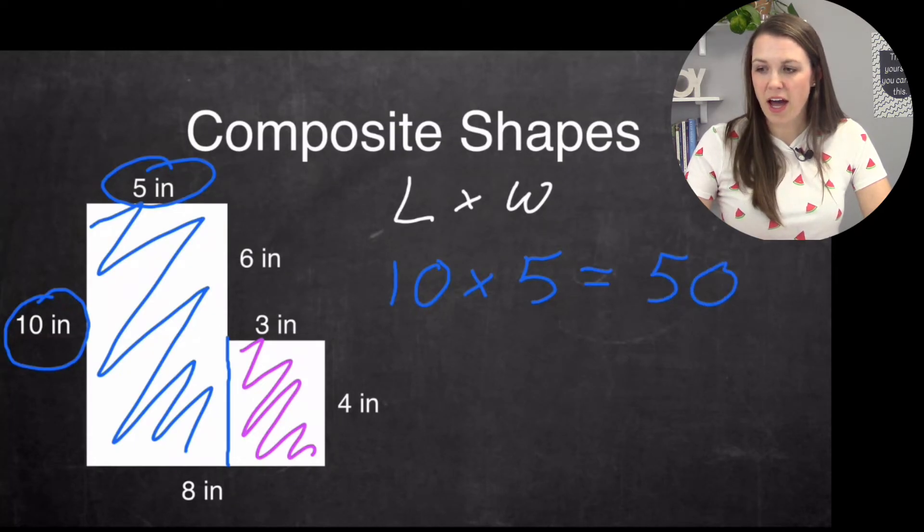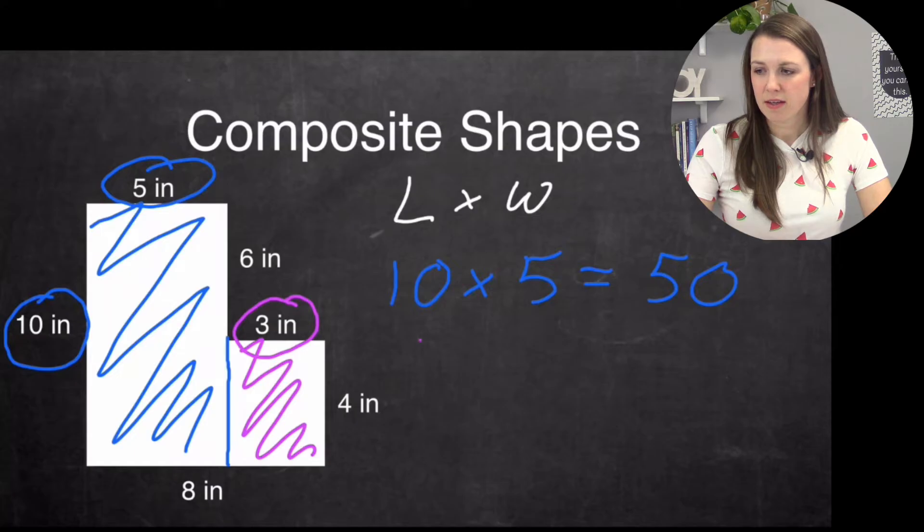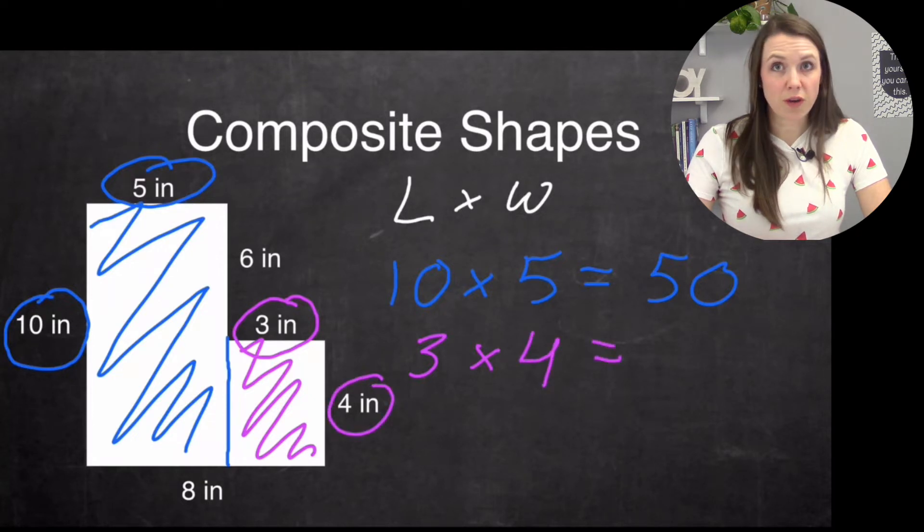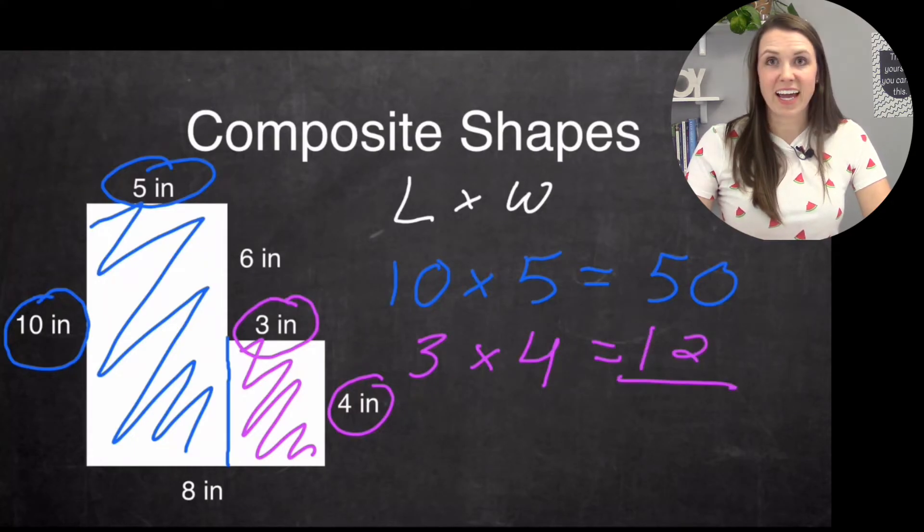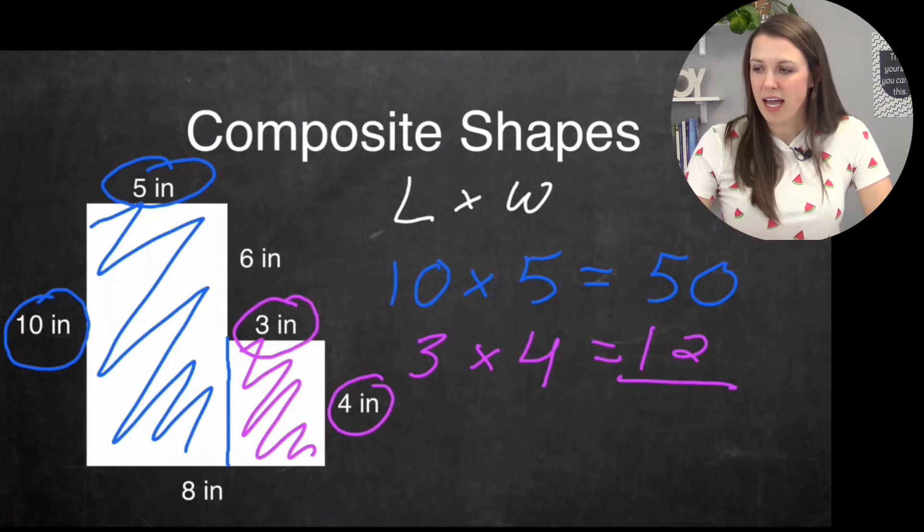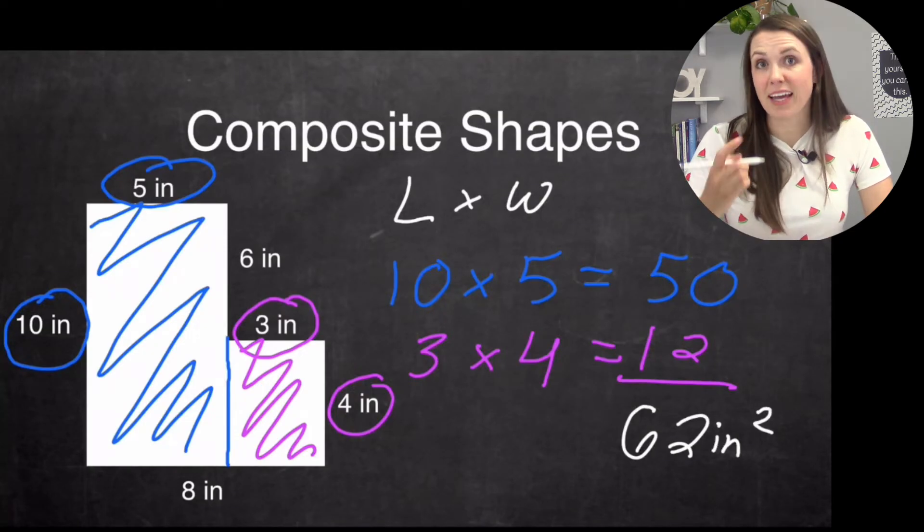And now I have my smaller rectangle. My length is three. And my width is simply four. So three times four is 12. And then I just add them together. And 50 plus 12 is 62 inches squared. And so that is going to be my answer.